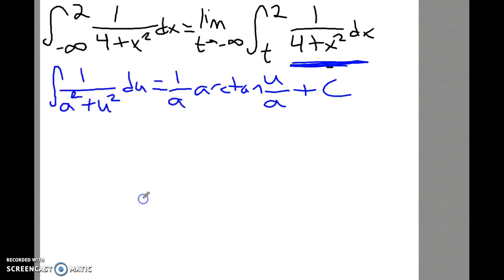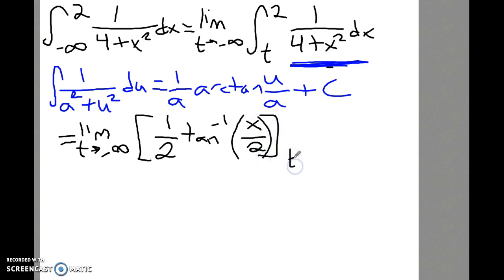This integral has that form where a is 2 and u is equal to x. So that step where we left off is equal to the limit as t approaches negative infinity of the antiderivative: 1 half arc tangent of x over 2, as x goes from t to 2.